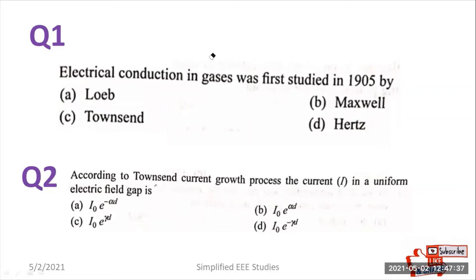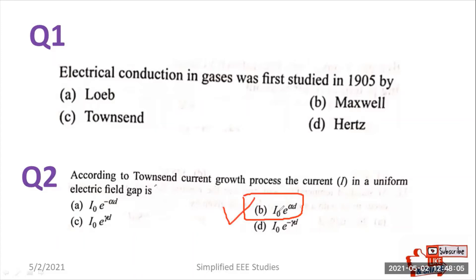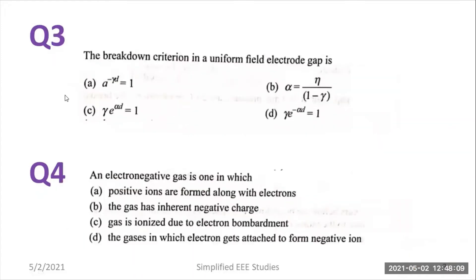Moving on to the next question: according to Townsend's current growth process, the current I in the uniform electric field gap is — which would be the right answer? You can recall the Townsend's current growth equation by considering the primary ionization coefficient. According to this question, you can directly answer: I = I₀ · e^(αd), where d is the distance between the two electrodes. So option B is the right answer.